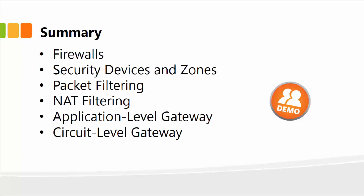To recap: we talked about firewalls and gave a high-level overview of what they are. There are different kinds of firewalls you can deploy — for instance, every operating system has its own built-in firewall, you can also purchase third-party firewalls, and you can have a firewall on hardware devices such as your router. We also covered packet filtering, NAT filtering, application level gateway, and circuit level gateway.